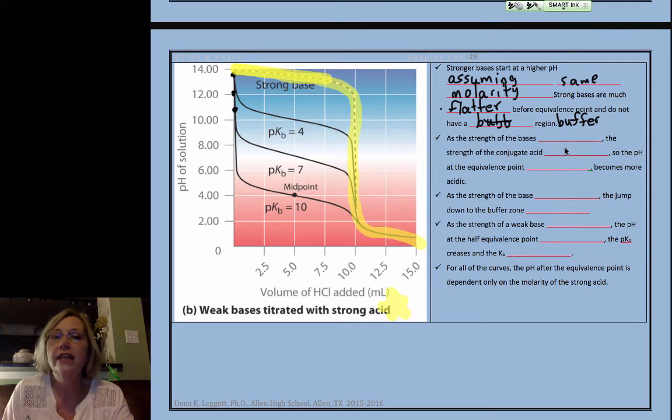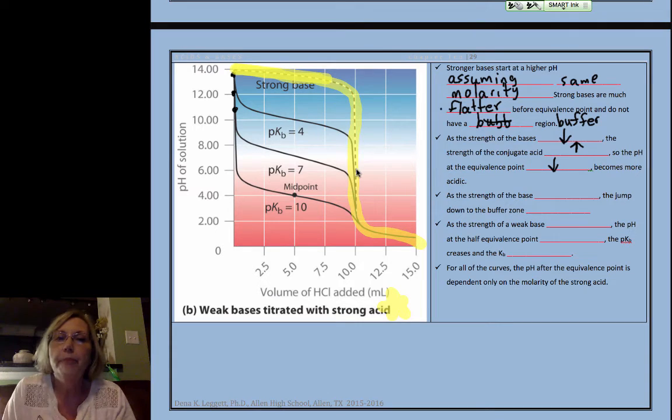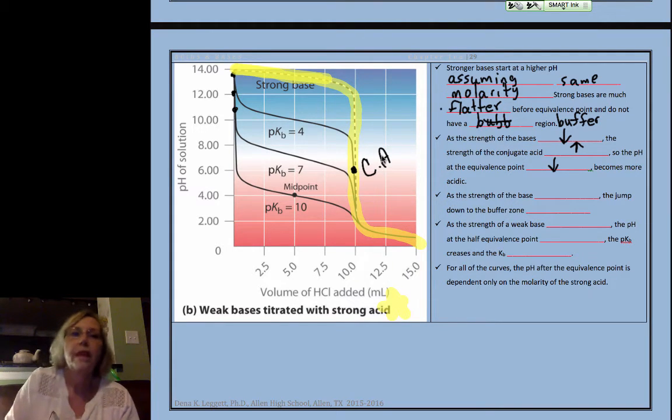As the strength of the base decreases, the strength of the conjugate acid increases. So, the pH at the equivalence point decreases. Now, for a base at the equivalence point, the only thing that's present is its conjugate acid.